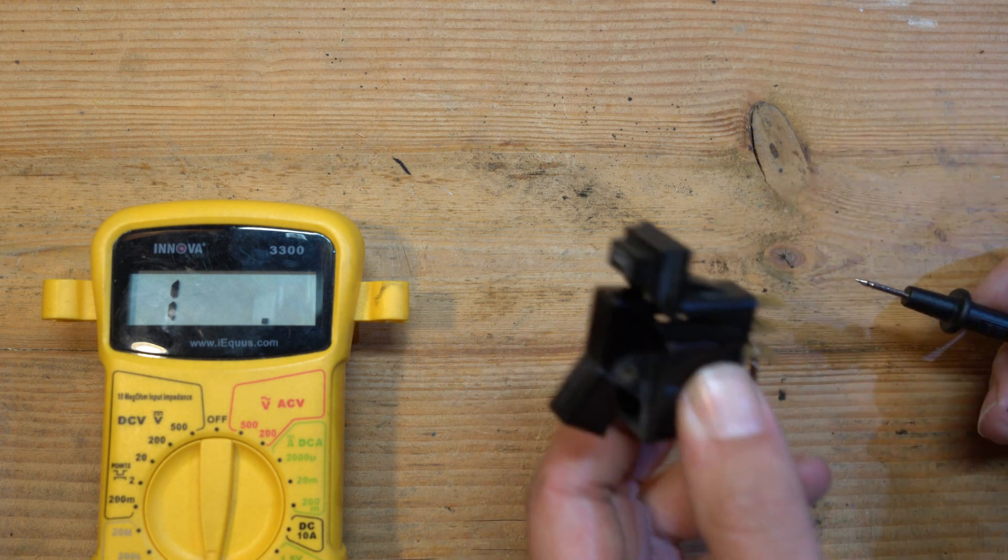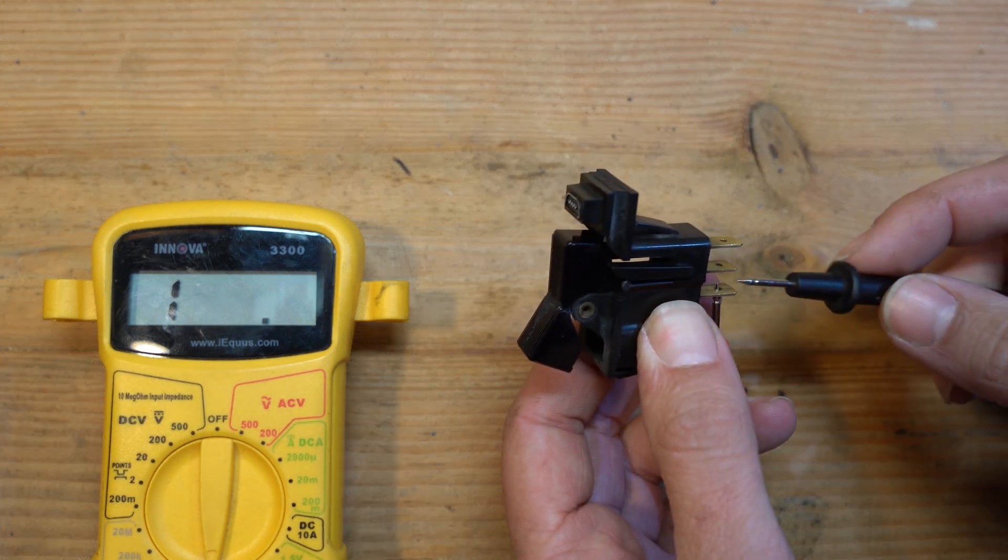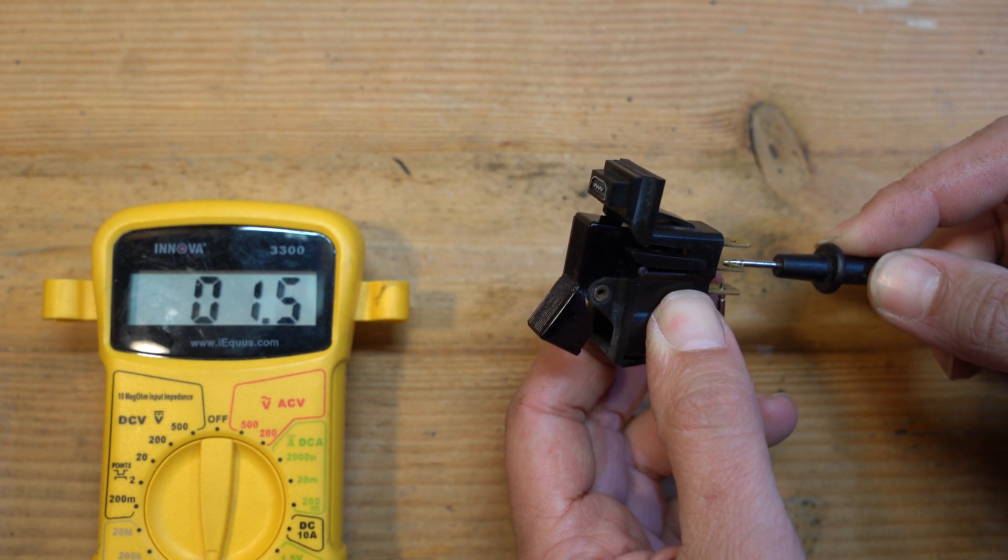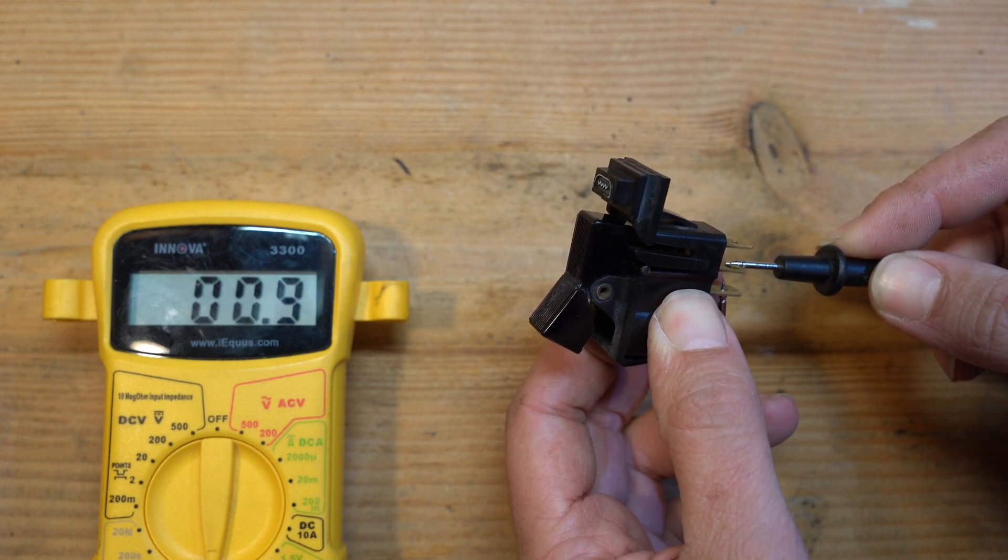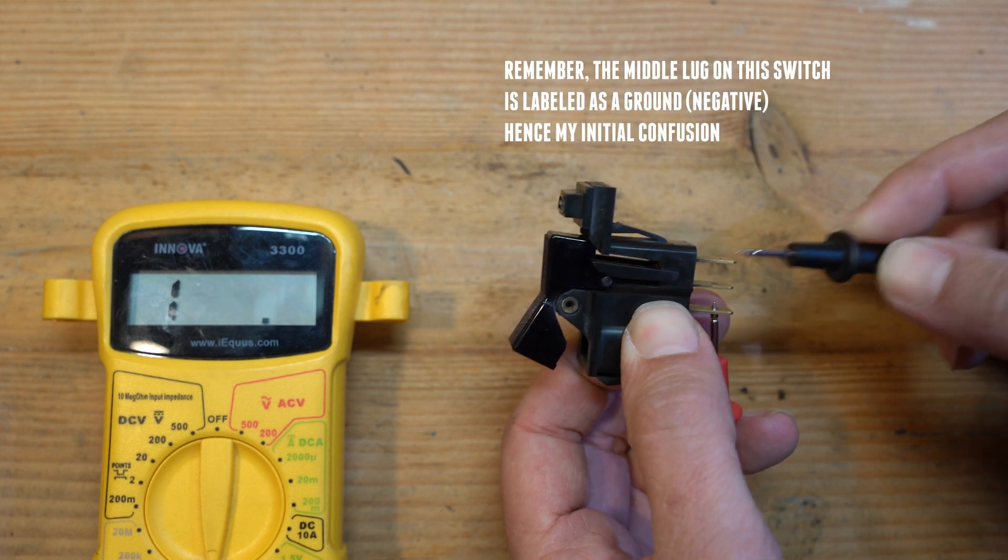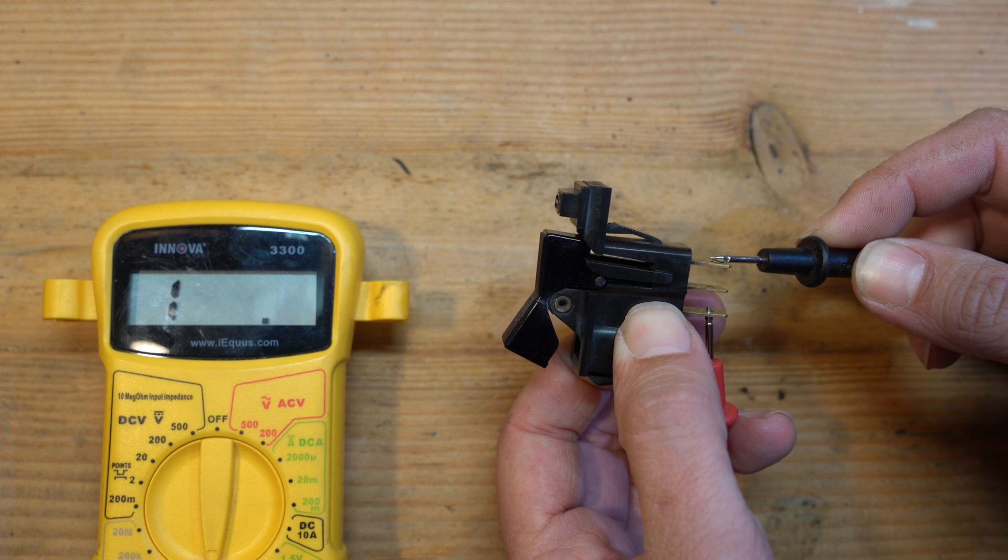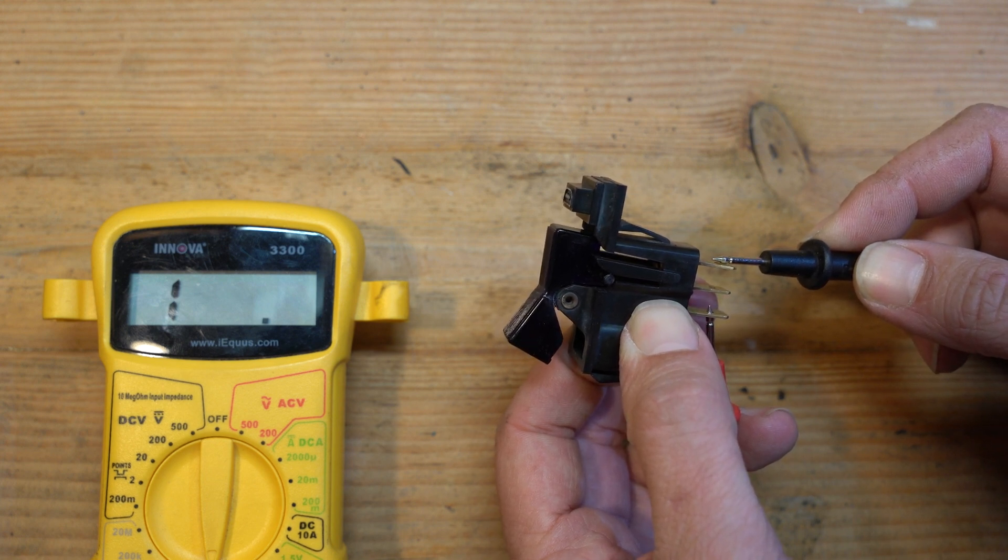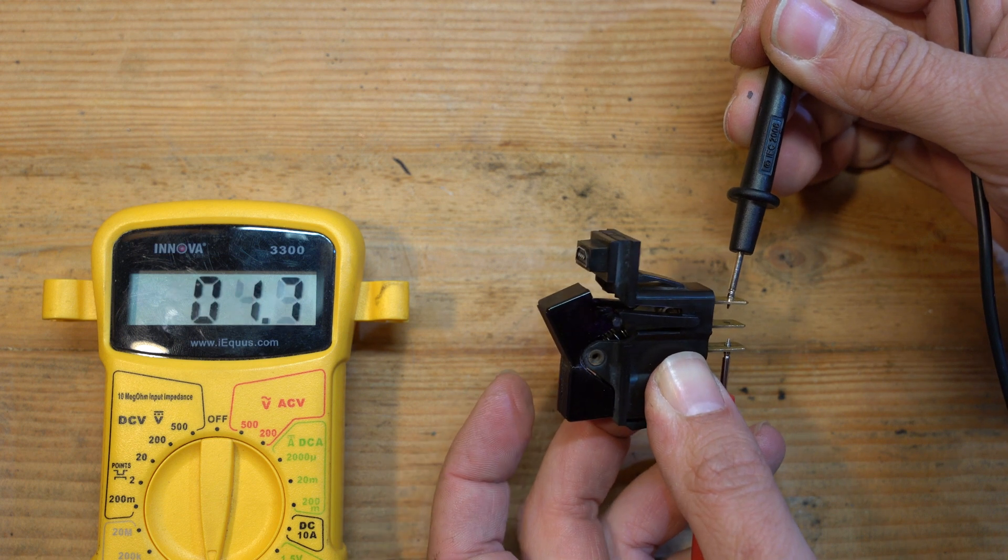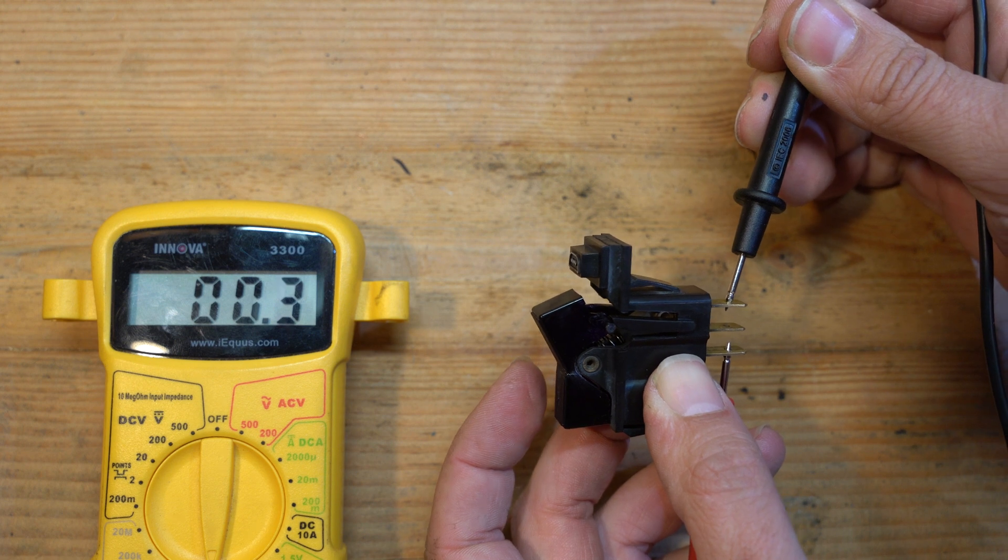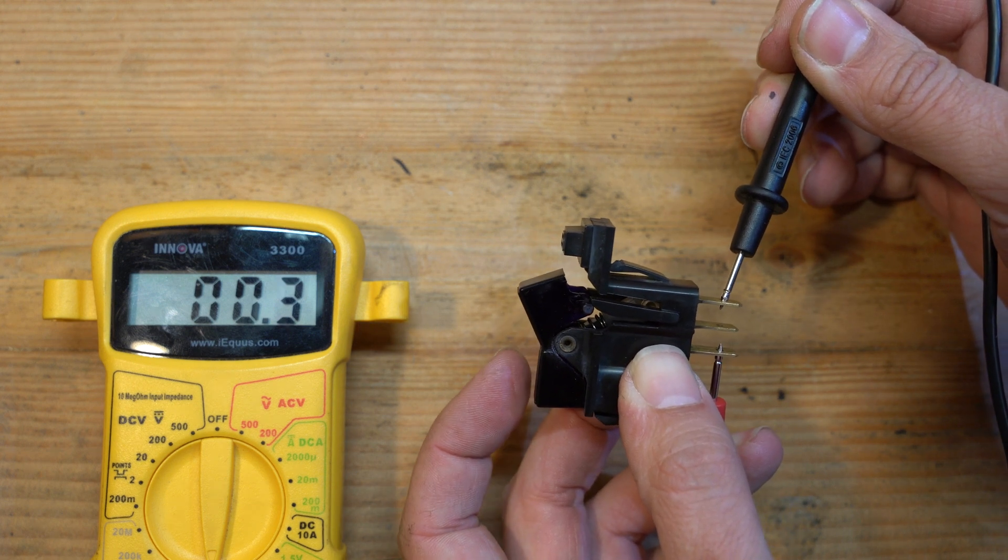This one, meanwhile, if I connect one of these to the bottom lug and the other one to the middle, you can see that's actually a closed circuit without the switch being on. So that's problematic. If I go to the top one, it's open. So not completed circuit. If I flip the switch, boom, it works between the top and bottom. So as long as we don't involve that middle lug, it should work fine.